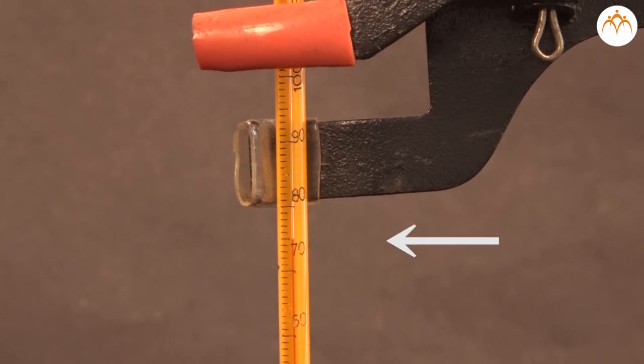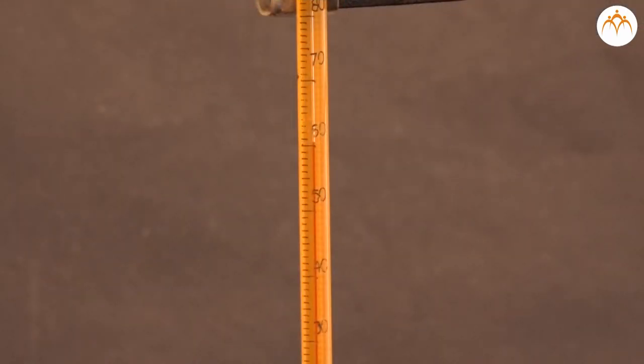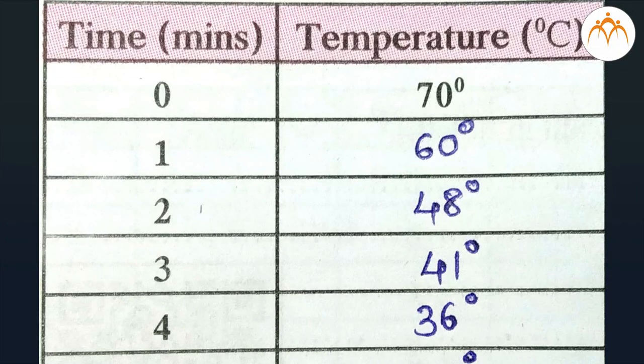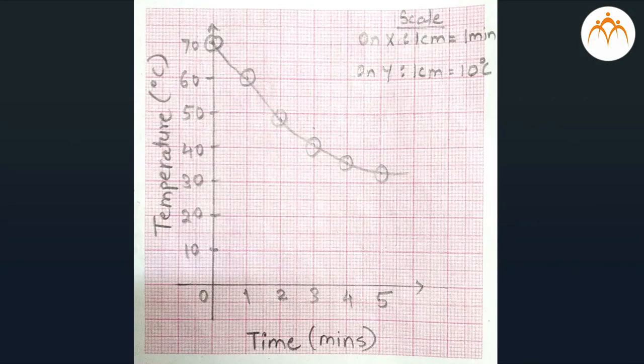When the water reaches 70 degrees Celsius, we start measuring the temperature after every 1 minute. Measure the temperature till the water reaches ambient temperature. Plot the graph of temperature versus time.